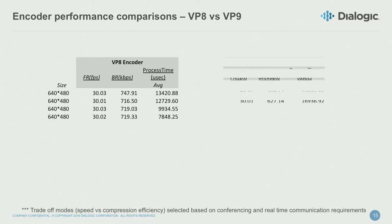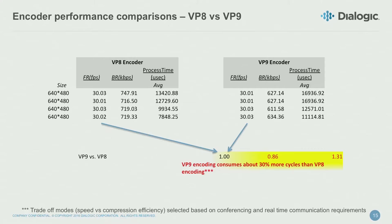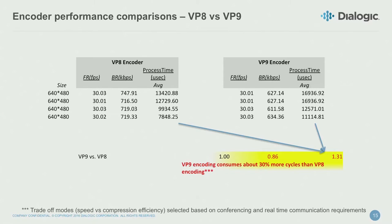Reversing it and looking at the encoding side — comparing VP8 to VP9. The frame rate is exactly the same. The bit rate is actually less on the VP8 side because we can control that a bit more. And then looking at the processing time it takes for encoding.